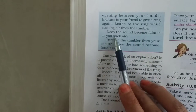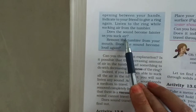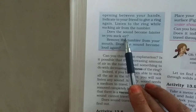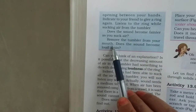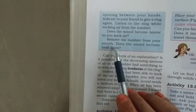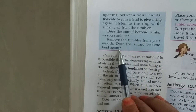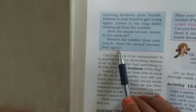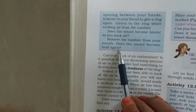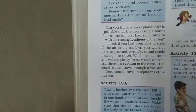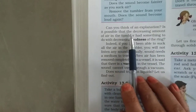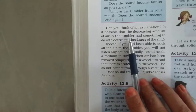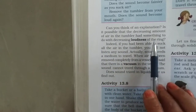When you hear the sound from the tumbler as you suck the air, you will notice the sound changes. If you remove your mouth from the tumbler, the sound becomes loud again. But when your mouth is on it, the sound is low. Can you think of an explanation? Is it possible that the decreasing amount of air in the tumbler had something to do with the decreasing loudness of the ring?